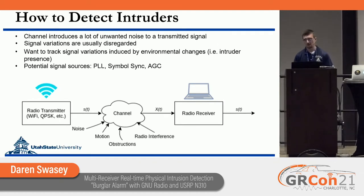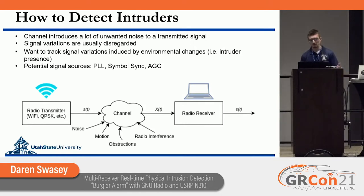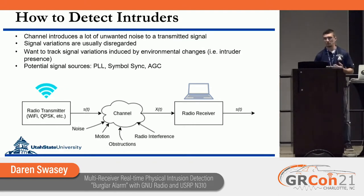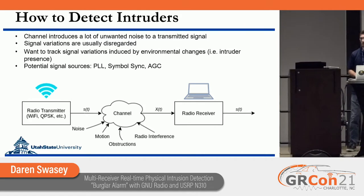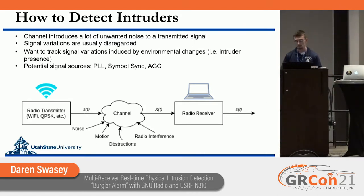First we have to figure out how we're going to detect intruders, and it turns out it's pretty simple and convenient. Imagine you have some signal S(t) going into a channel that introduces a lot of noise and information we don't care about — motion from people moving around, doors, walls, and windows that introduce attenuation or phase shifts to the signal — and it comes out as a signal X(t).